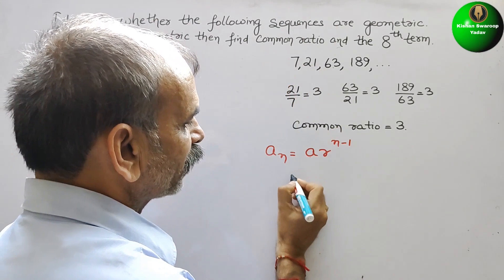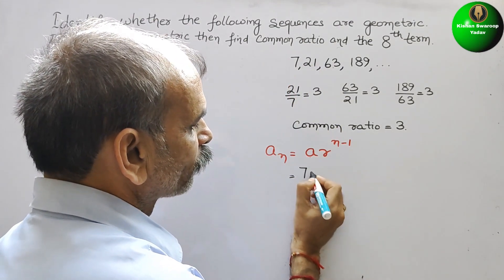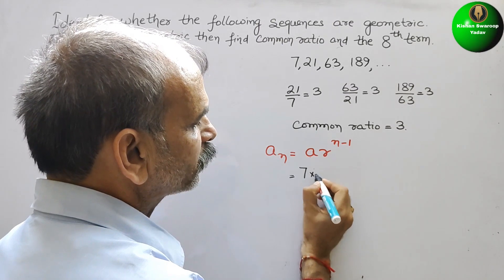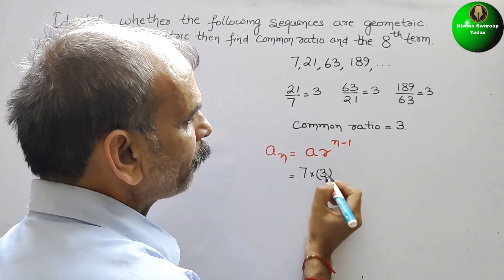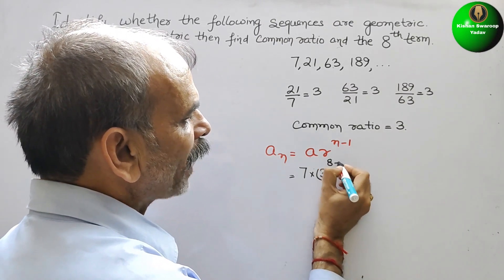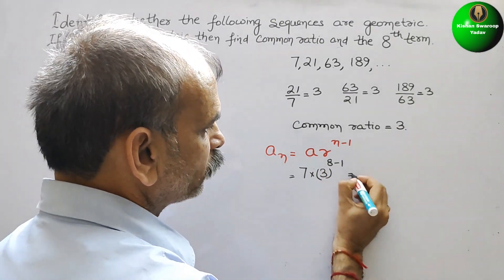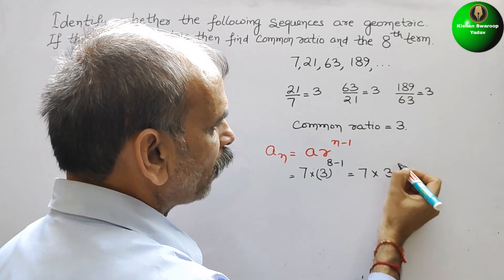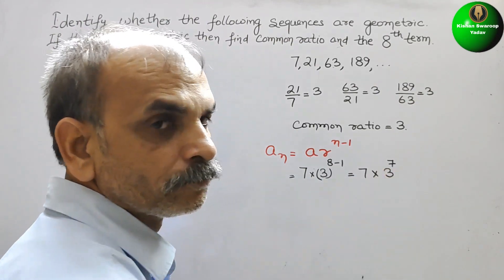Now you can see A is 7, R is 3. So here comes 3 and the power is 8 minus 1, that is 7. So that is 7 into 3 to the power of 7.